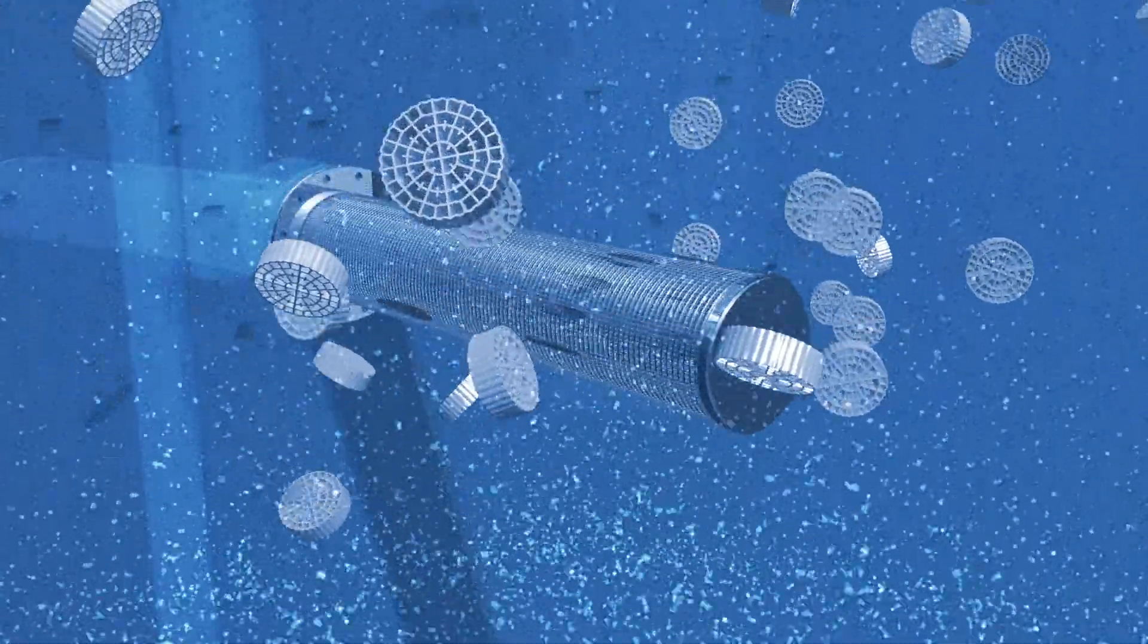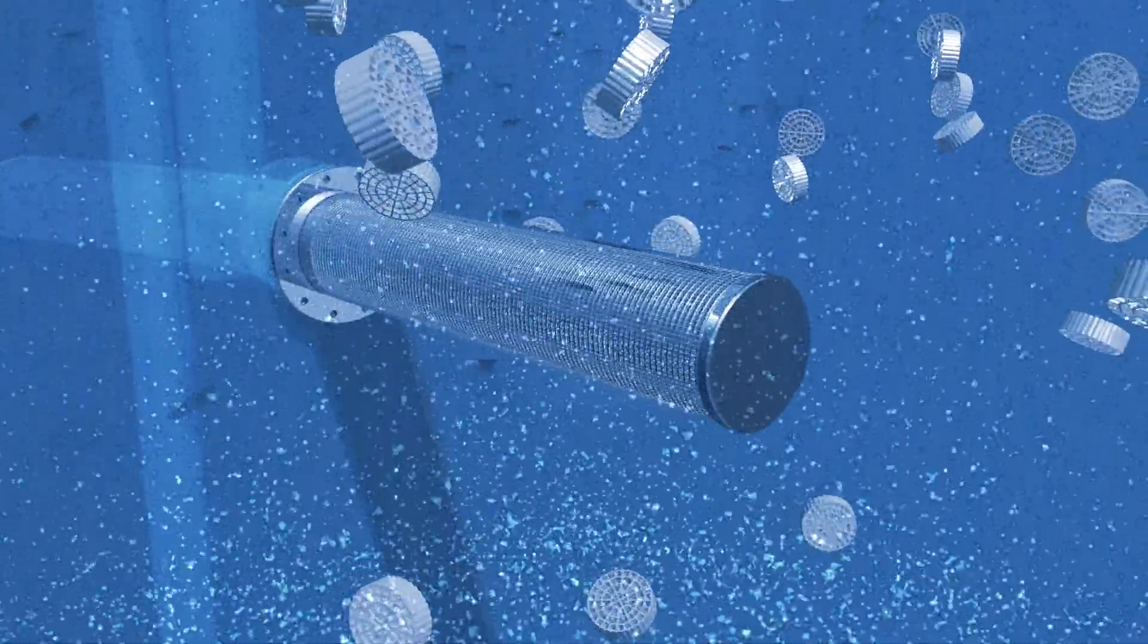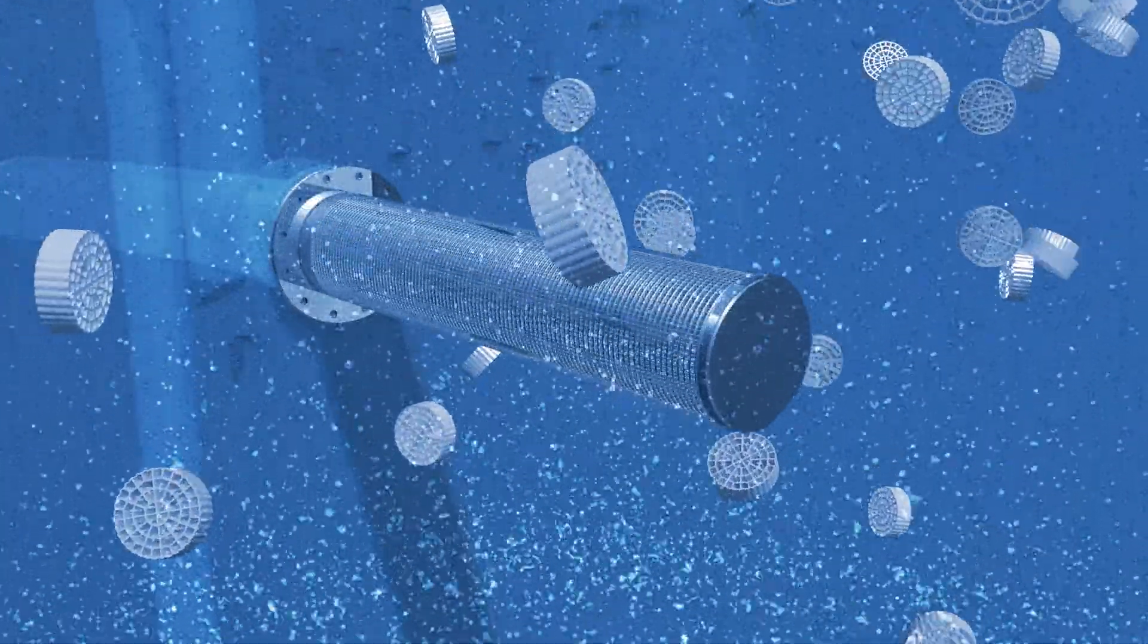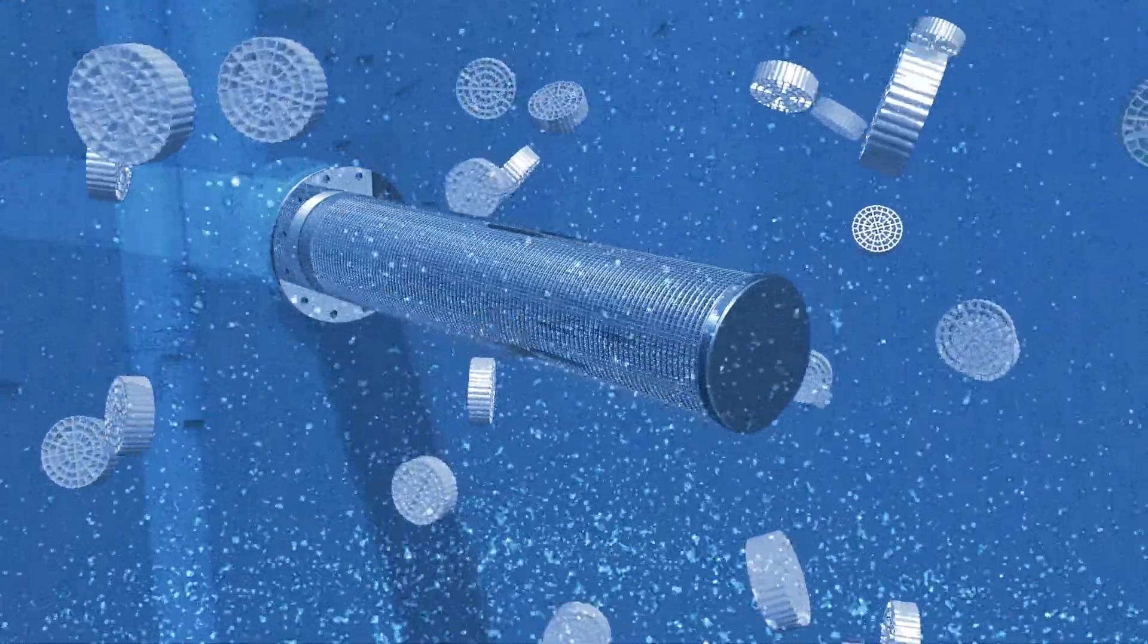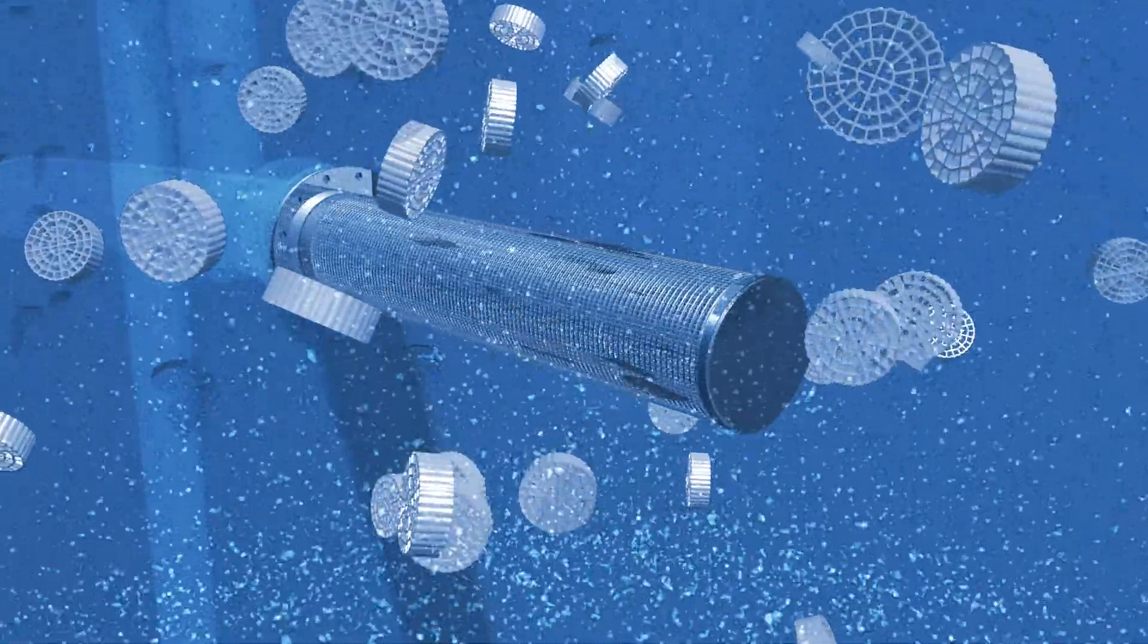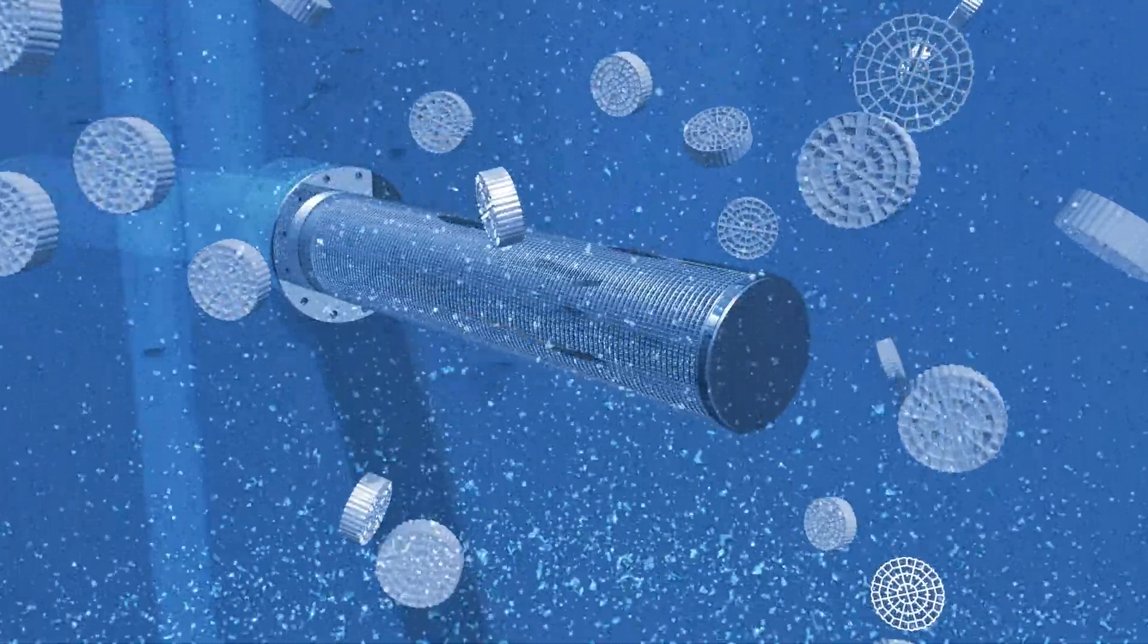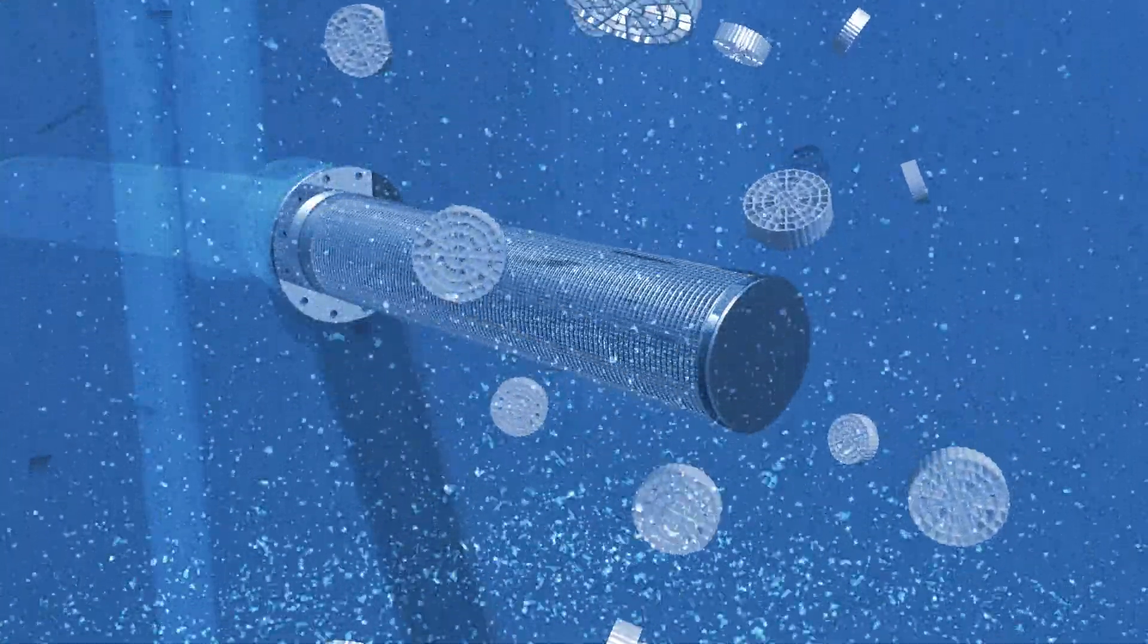Stainless steel media retention screens are placed on the effluent flange, as well as the overflow and drain flange, to prevent the media from escaping the reactor. The continuous movement created by the media in the tank scours the screen and minimizes any deposition of solids which could create head loss.